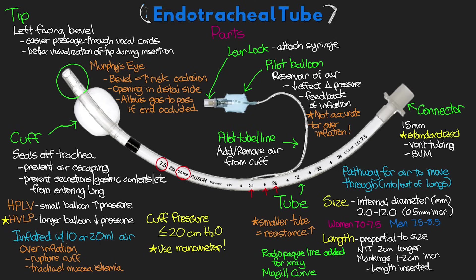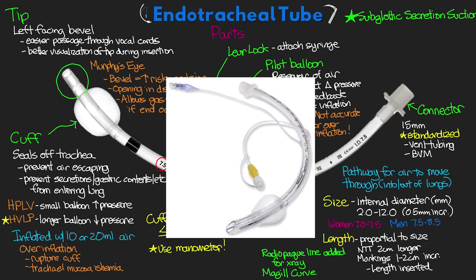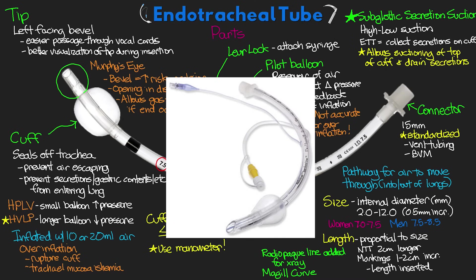One additional common feature not part of the standard ET tube is subglottic secretion suction, often referred to as the Hi-Lo suction. With an ET tube in place, oral secretions can drain down into the subglottic space and accumulate on top of the cuff. The Hi-Lo is a smaller tube that allows low suction to be applied to the top of the cuff to drain those secretions away. This is used as a VAP prevention strategy, and studies have shown a 50% reduction in ventilator-acquired pneumonia with use of this device.